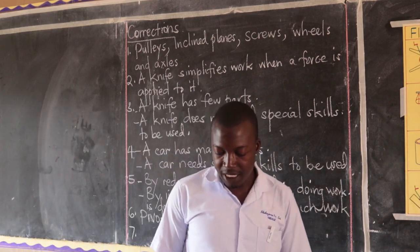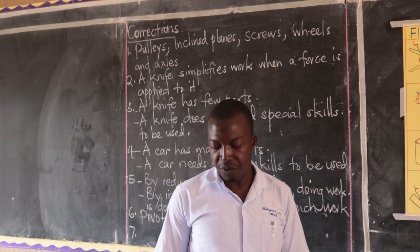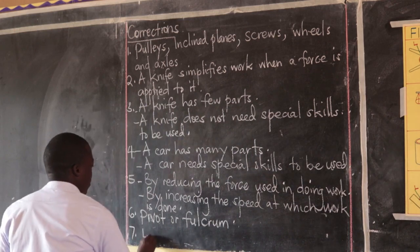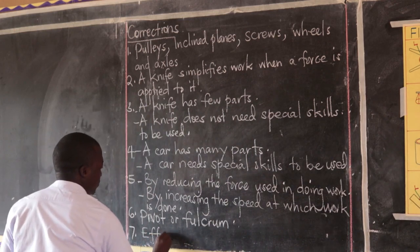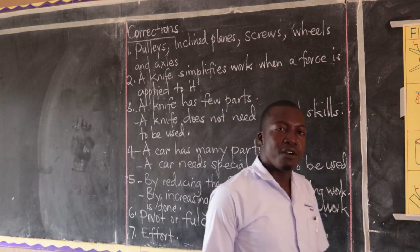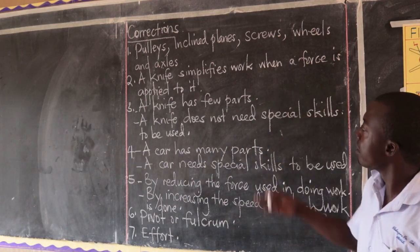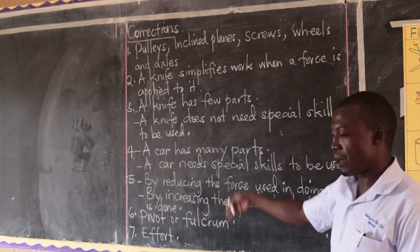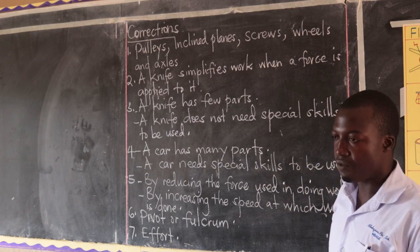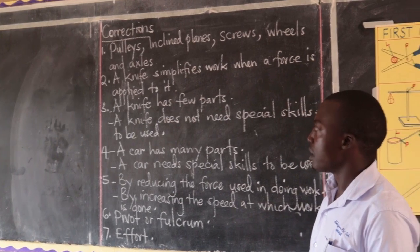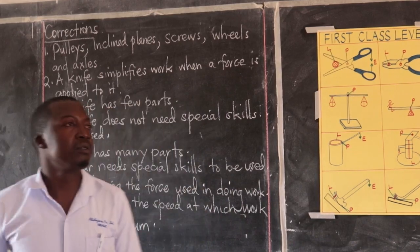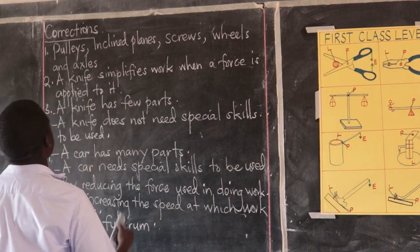Then lastly, one term describes the force applied to a machine in order to do work. That force is called effort. That comes to the end of our corrections. You can go through your work and compare with this. If you have passed, that is a good thing; if you have failed somewhere, write corrections. Now I want to continue to have the lesson for today.